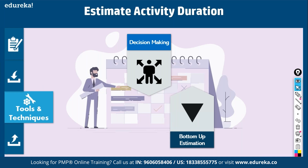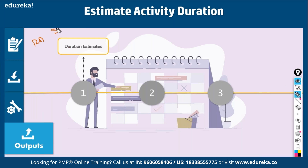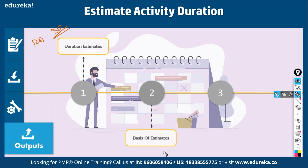Decision-making is also a tool — work package managers meet the project manager to settle timelines. Bottom-up estimating is where you know the actual detailed information at the activity level and work it upward to the work package level. The output is duration estimates for each activity — for example, requirement documentation as one work package will take 30 days. You also produce a basis of estimate, which is an important document justifying how you arrived at the 30-day estimate.